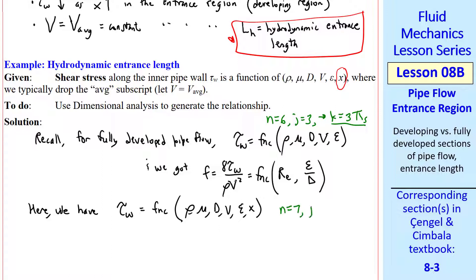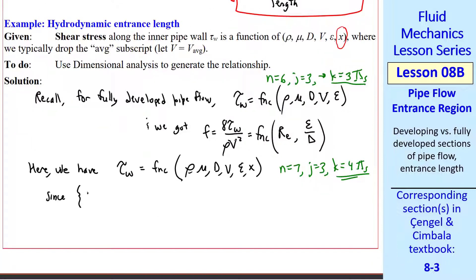So n equals 7, j is still 3, so we expect 4 pi's. We can do this one in our head. Since the dimensions of x are length, which is the same as epsilon, the roughness, we expect our 4th pi to be the same form.